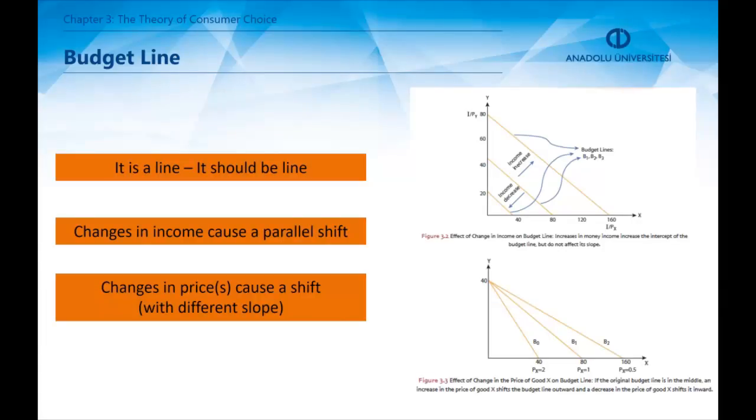Budgets of a consumer can be shown with a line like in the illustration. Firstly, budget line is a line and should be a line. Second, any change in income or in prices causes a shift in budget line. An income change causes a parallel shift, whereas changes in prices cause a shift that generally changes the slope.